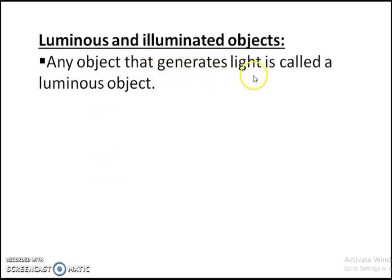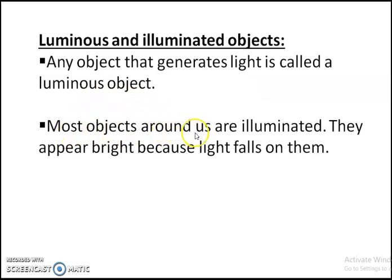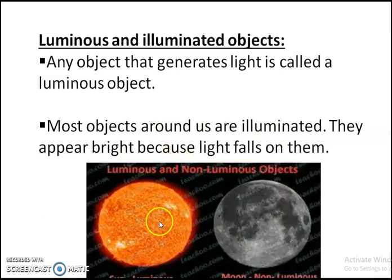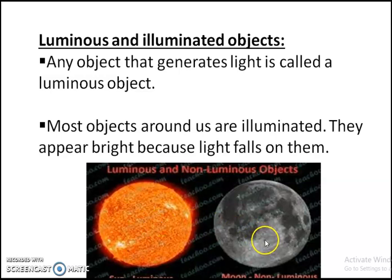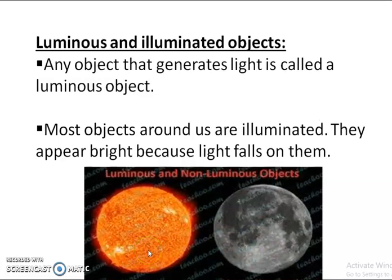Luminous and illuminated objects. Any object that generates light is called a luminous object — they have their own light. Most objects around us are illuminated; they appear bright because some light falls onto them. For example, the sun is a luminous object. The moon does not have its own light but is illuminated because it reflects light from the sun. Hence the sun is said to be the luminous object and the moon is said to be a non-luminous object.